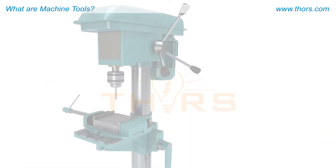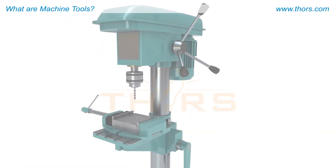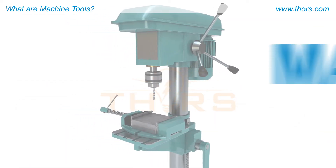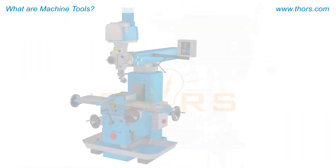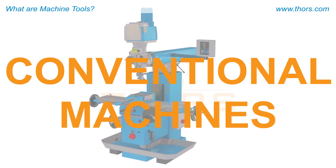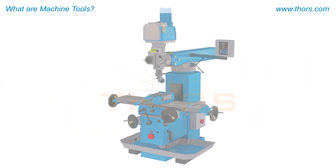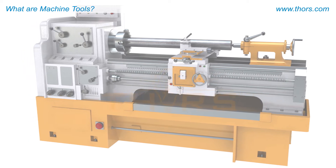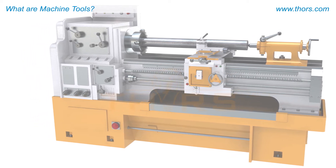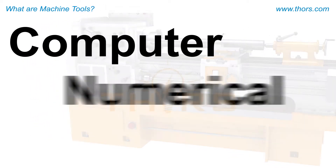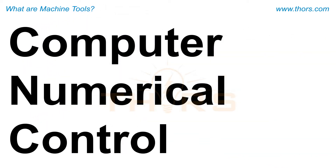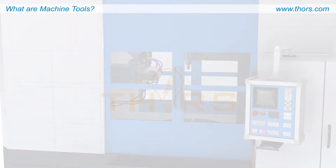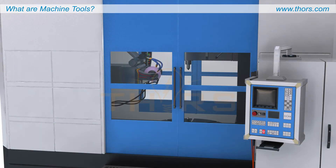Still in use today are machines known as manual machines, or conventional machines, which rely heavily on the skill and control of the operator. Machine tools under computer numerical control, or CNC, are now commonplace.